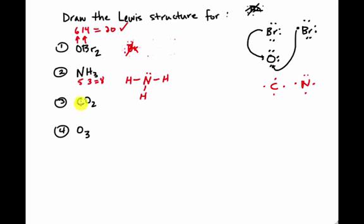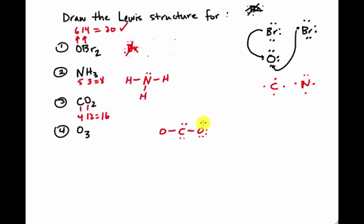Now carbon dioxide. Carbon has four valence electrons, and each oxygen has six, so the two oxygens give twelve — a total of 16 valence electrons. I put carbon in the middle with oxygen on either side and start filling in electrons. If I just fill them all in as single bonds and lone pairs, I end up using 20 electrons — way too many. So that can't be the correct structure for carbon dioxide.